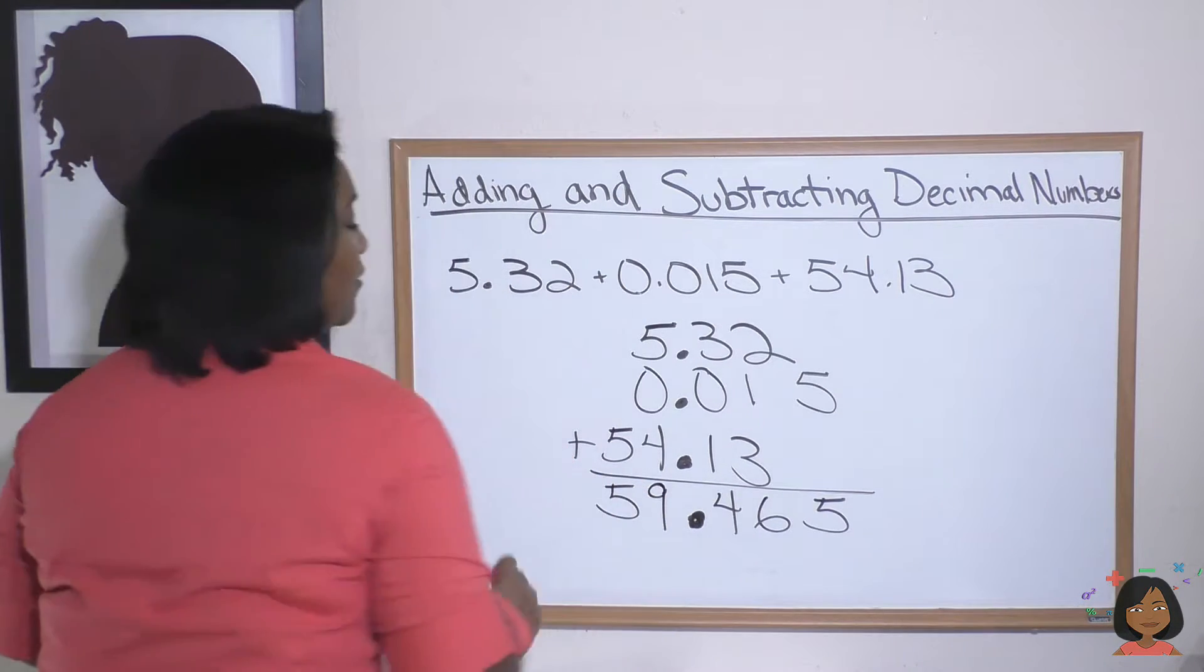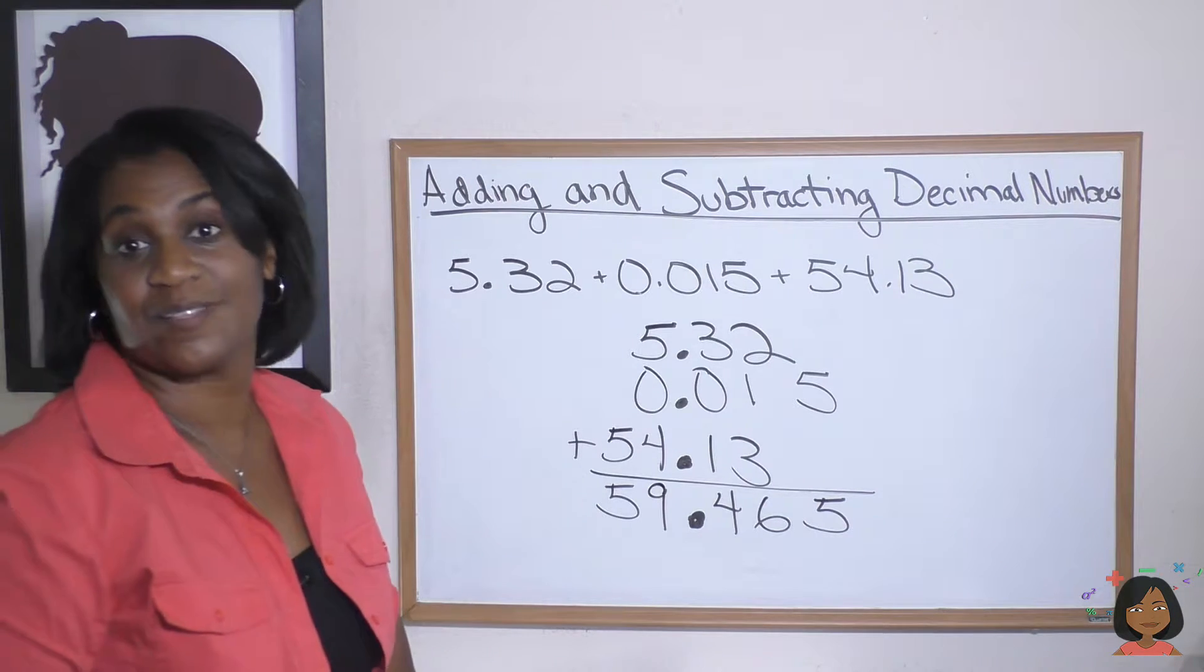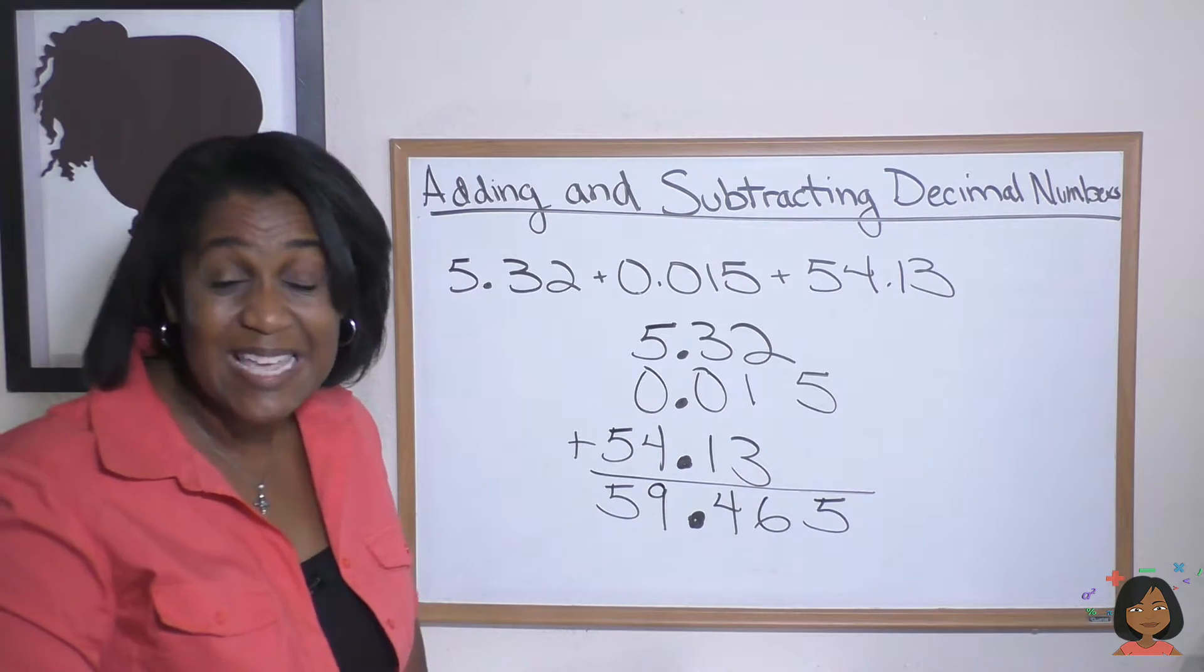So my answer is 59.465. And that's it, just make sure those decimals are always lined up.